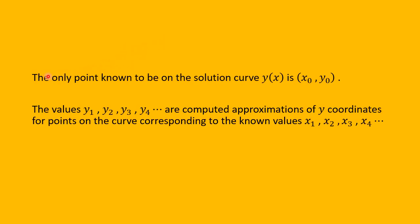To reiterate: the only known point on the solution curve y of x is the point with coordinates x-naught, y-naught, from the initial condition. The values y sub 1, y sub 2, y sub 3, y sub 4, and so on are computed approximations of y-coordinates for points on the solution curve corresponding to x sub 1, x sub 2, x sub 3, x sub 4, and so on. As we go from step to step, we accumulate a little more error each time, but if h is small, the accumulated error should not be too large.